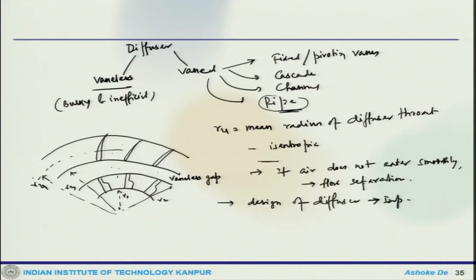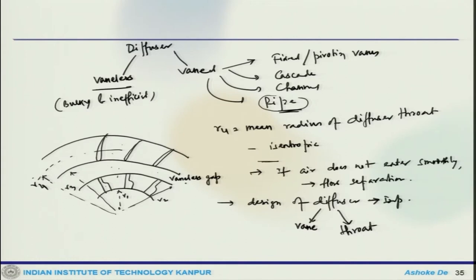This is an important task. The vane is one component and the throat is the second component. There could be a vaneless space between the impeller and the diffuser. Because the air leaving the impeller has to traverse through this gap, its direction may change. So to find the correct inlet angle of the diffuser vane, you need to consider this vaneless passage in the design consideration.